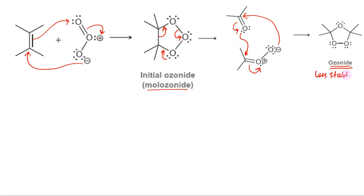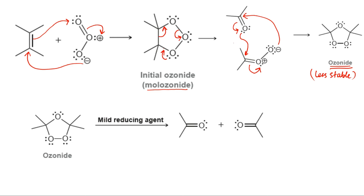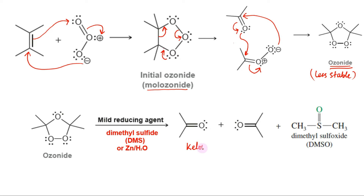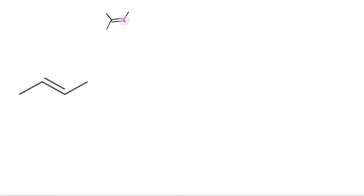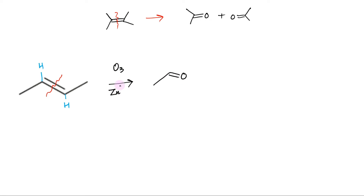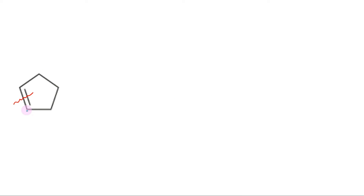Ozonides are not very stable and are rarely isolated. In most cases they are immediately reduced by a mild reducing agent such as zinc or dimethyl sulfide. The products of this reduction are ketones and aldehydes depending on the substituents attached. To predict the products from ozonolysis of an alkene, erase the double bond and add two oxygen atoms as carbonyl groups where the double bond used to be. In this example, since hydrogen is present on both double-bonded carbons, both will be oxidized to aldehyde groups, meaning two acetaldehyde molecules will be formed.